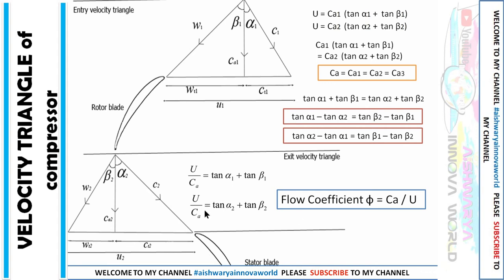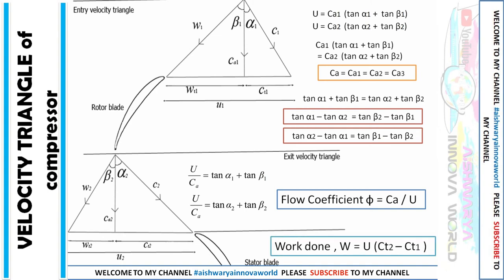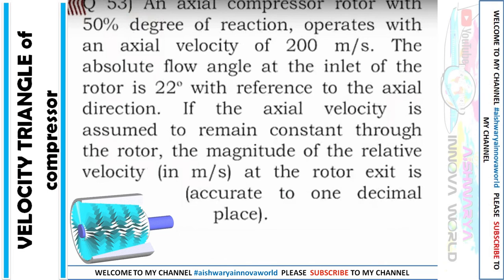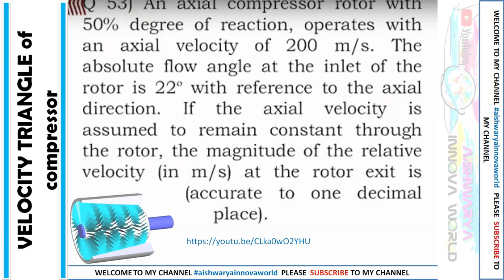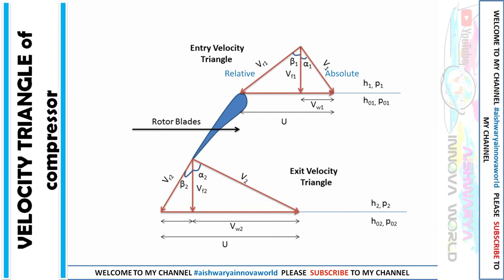Next comes work done: W = U × (CT2 − CT1). To remember which term comes first, recall W = U(2 − 1), meaning CT2 minus CT1. This is also a GATE 2018 question, available in my channel — the link is in the description box. Note that in some textbooks, absolute velocity is denoted as V1, relative velocity as Vr1, and axial velocity as Vf. Don't get confused — this is just another notation for the same velocity triangle.